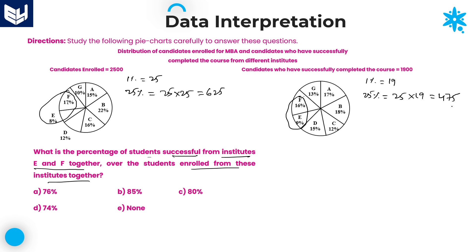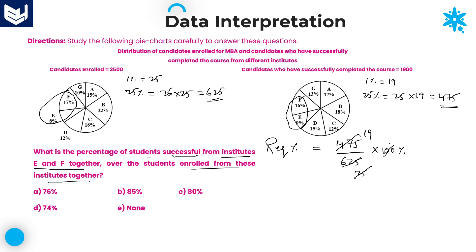Now, 475 is what percentage of 625? The required percentage equals 475 divided by 625 into 100. Simplifying — 25 into 19 over 25 into 25 — the 25s cancel, giving 19 into 4, and 19 fours are 76. So 76 percentage of candidates have successfully completed their course from institutes E and F together. Option A is the right answer.